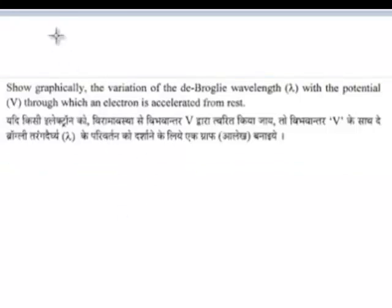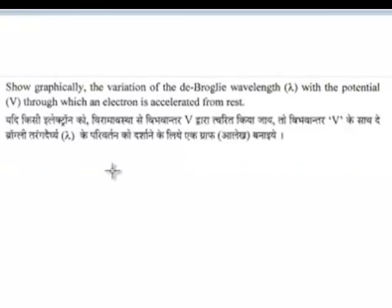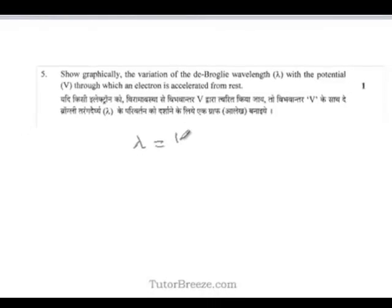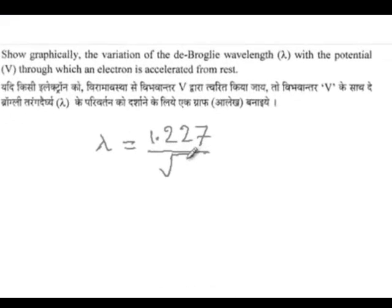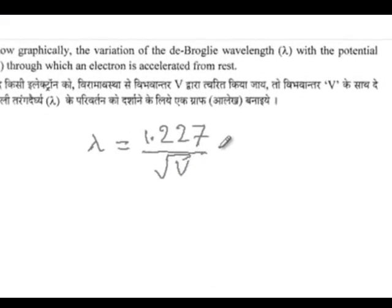See the wavelength, the de Broglie wavelength is given as lambda equals 1.227 over square root V nanometer.